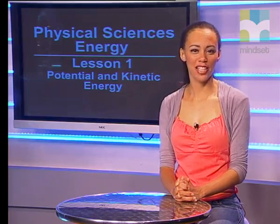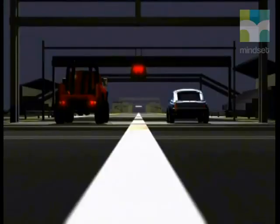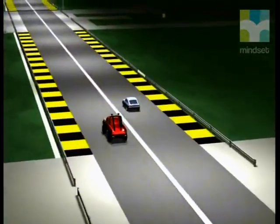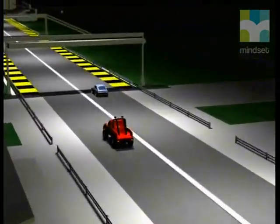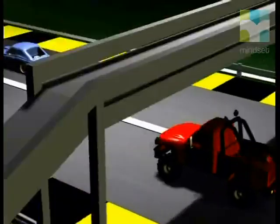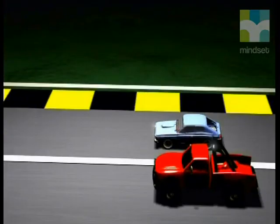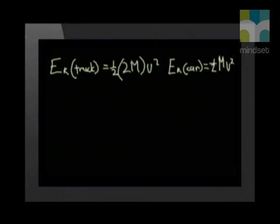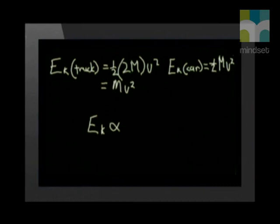Keke will now show us the relationship between kinetic energy and the mass of an object in motion. If two vehicles have the same velocity but different masses, both vehicles have the same velocity v, but the mass of the truck is double that of the car — 2m. Inserting that into the equation, the truck will have double the kinetic energy of the car. The vehicle with the larger mass has the greater kinetic energy. In fact, kinetic energy is directly proportional to the mass of the object.